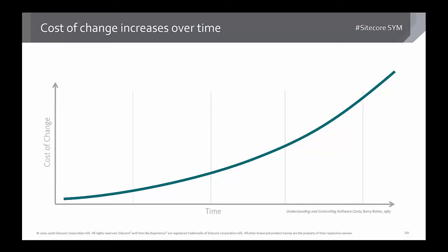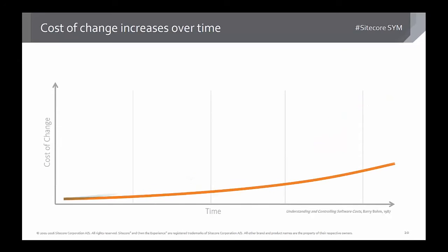The cost of change increasing is a given, because the technology we built on yesterday is outdated today. Just having to update technology adds cost. The person who built the software left the company two months ago, so you've lost the knowledge. New principles, new tools, wanting to move from Web Forms to MVC — all that stuff plays in. The point of architecture is to try to keep that cost down, to look ahead, and build in the right way so that we can constantly upgrade and keep on top of things.